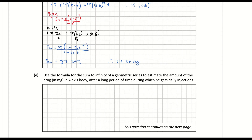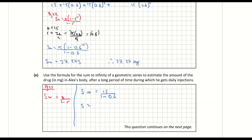Part E: Use the formula for the sum to infinity of a geometric series to estimate the amount of drug in Alex's body after a long period of time. From page 22 of the log tables, the sum to infinity equals a over (1 minus r). Our a is 15 and r is 0.6, so sum to infinity equals 15 divided by (1 minus 0.6), which gives 37.5 milligrams.